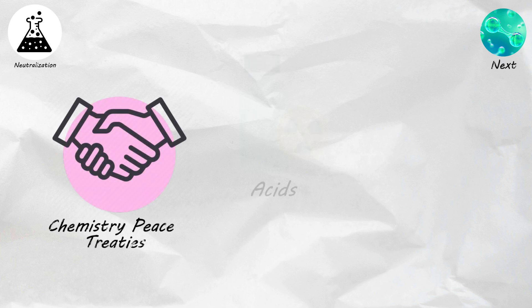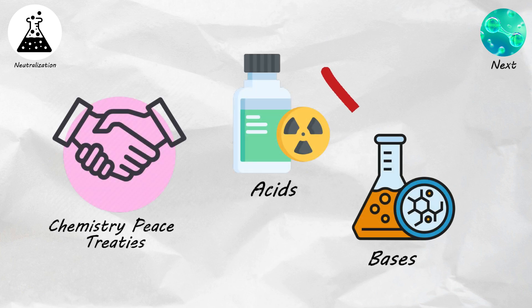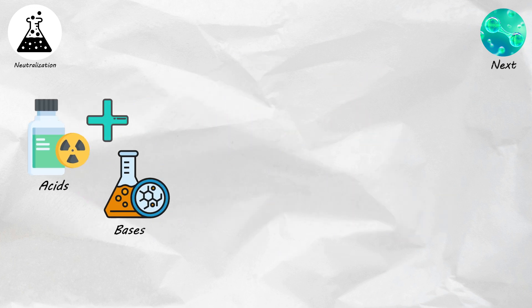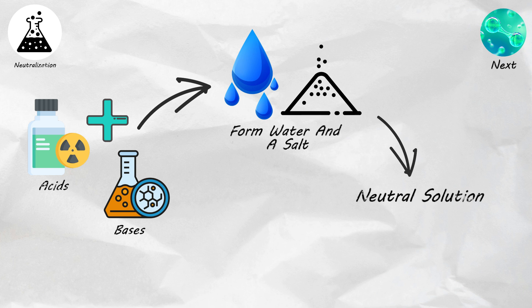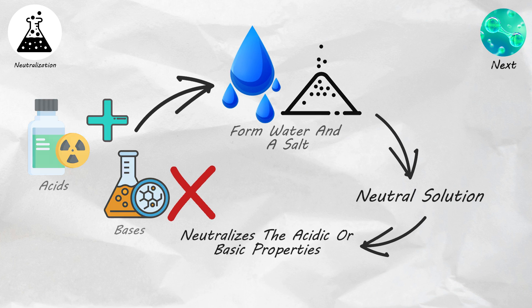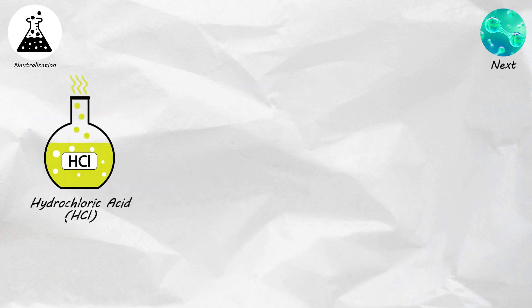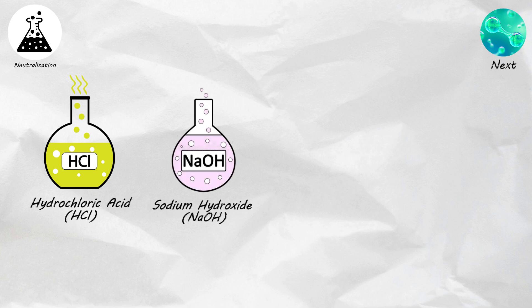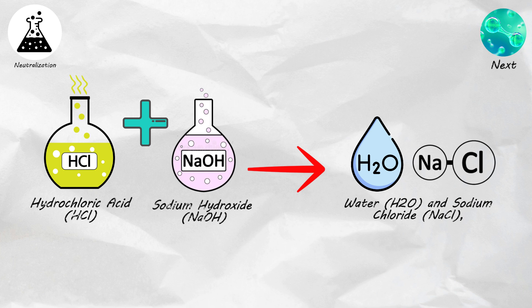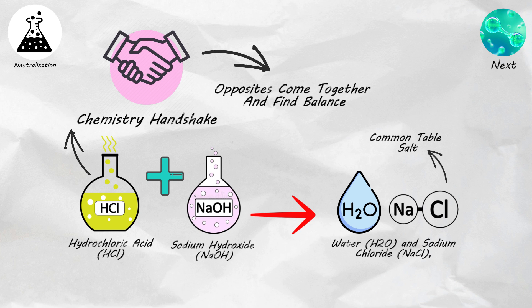Neutralization. Neutralization reactions are like chemistry peace treaties. They bring together acids and bases to cancel out each other's effects. When an acid and a base react, they form water and a salt, resulting in a neutral solution. This process effectively neutralizes the acidic or basic properties of the initial solutions. For example, when you mix hydrochloric acid, HCl, with sodium hydroxide, NaOH, they react to form water and sodium chloride, NaCl, a common table salt. It's like a chemistry handshake, where opposites come together and find balance, creating a neutral outcome.